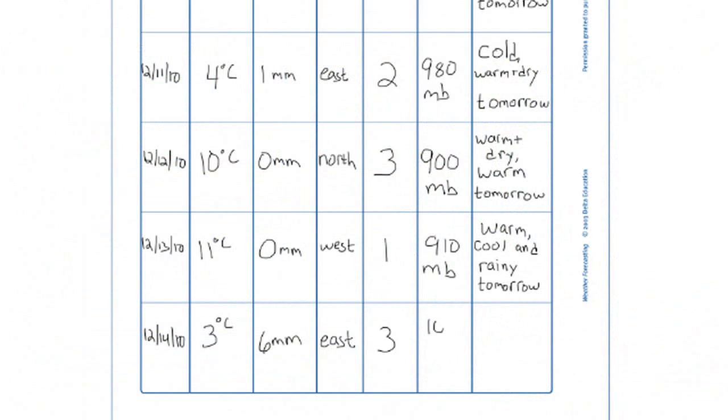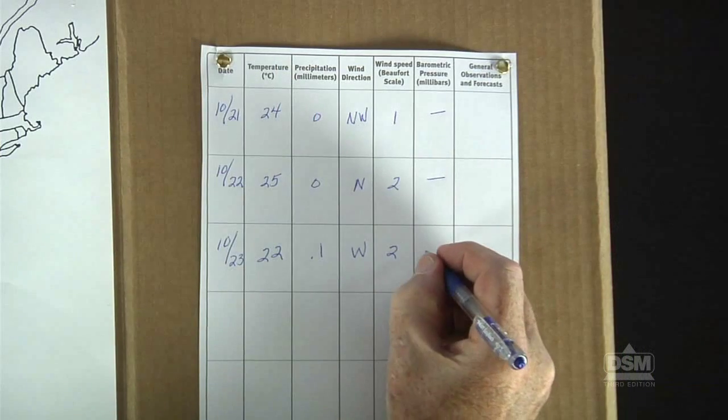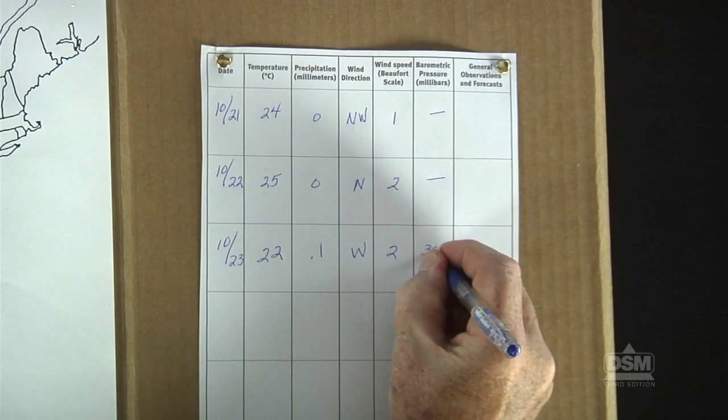Have students observe and record on Activity Sheet 2 the temperature, the amount of rainfall, and the wind direction and speed every day for the next eight days. Students should transfer the data to the Daily Weather and Observations chart on their station.